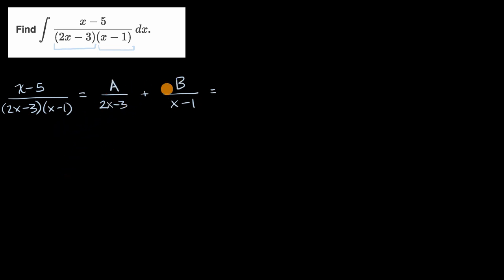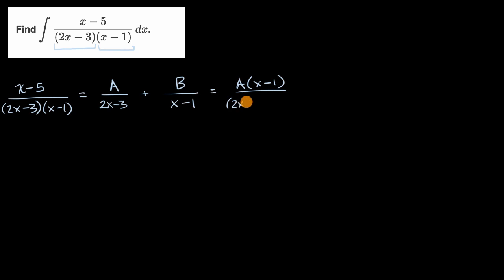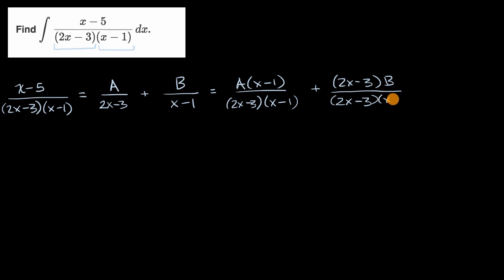How do we solve for A and B? We add them as if we're adding two fractions with unlike denominators. We need a common denominator, so we multiply the first rational expression by (x minus one) in the numerator and denominator, giving A times (x minus one) over (two x minus three)(x minus one). For the second, we multiply numerator and denominator by (two x minus three), giving (two x minus three) times B over (two x minus three)(x minus one).